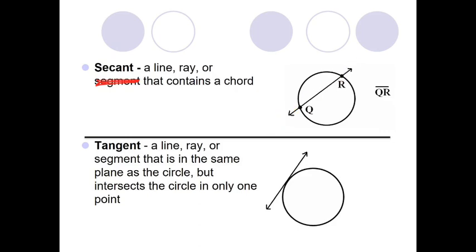Or I could back up and if I only wanted to refer to this part of it right here, we could refer to it as ray RQ. But that's basically a secant. Note a chord is when it's just a segment, but if it extends past in the form of a ray or a line, we call it a secant and not just a chord.